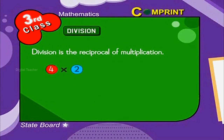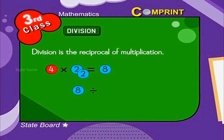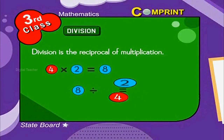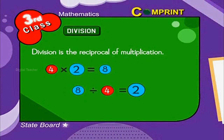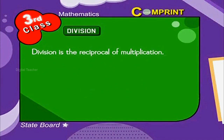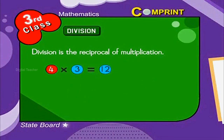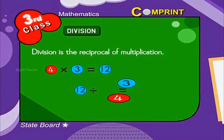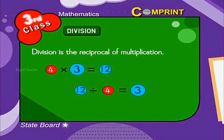4 into 2 is equal to 8. 8 divided by 2 is equal to 4, and 8 divided by 4 is equal to 2. Have another example here. 4 into 3 is equal to 12. This can be said as 12 divided by 3 is equal to 4, and 12 divided by 4 is equal to 3.